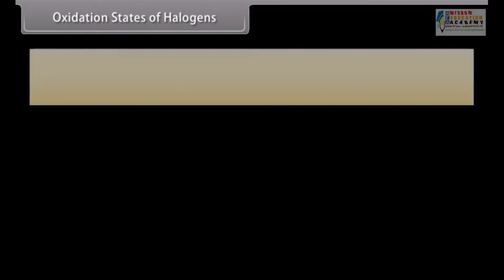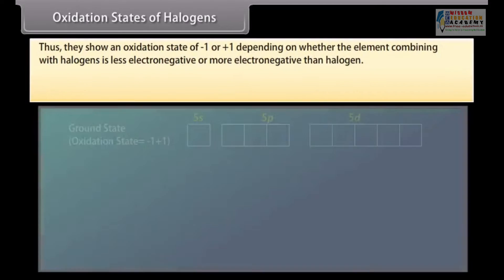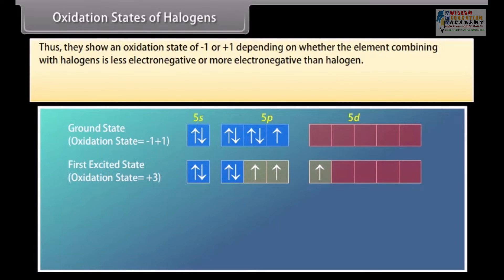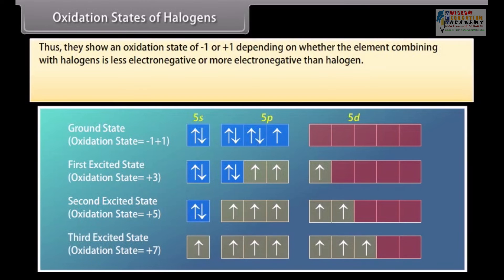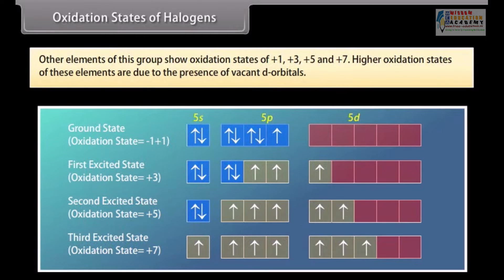All elements of the halogen family have a tendency to acquire noble gas electronic configuration by either accepting an electron, resulting in the formation of a monovalent anion, or by sharing one electron. Thus they show an oxidation state of −1 or +1. Fluorine is the most electronegative element and always has −1 oxidation state and never has a positive oxidation state. Higher oxidation states are not possible in fluorine as it does not have vacant d-orbitals. Other elements of this group show oxidation states of +1, +3, +5 and +7, due to the presence of vacant d-orbitals.